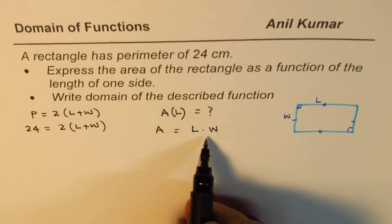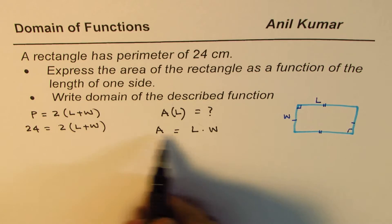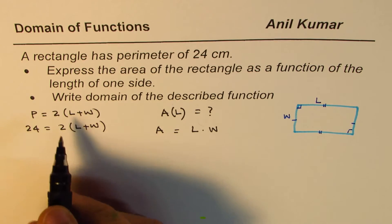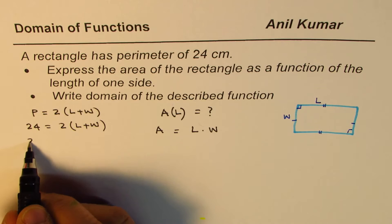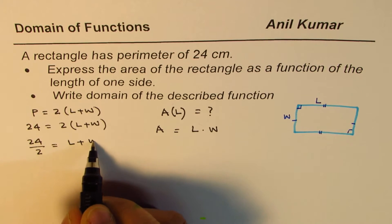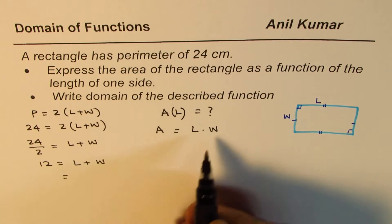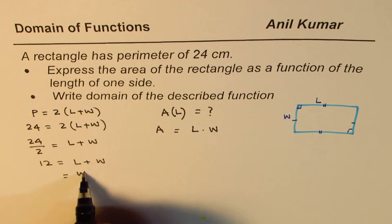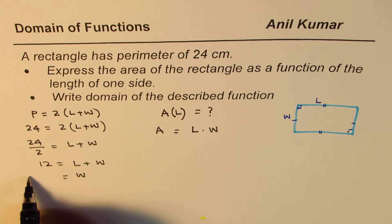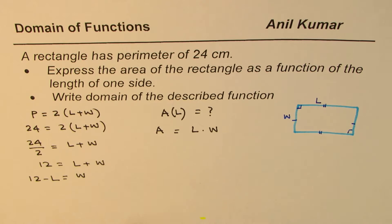Now if you want this equation only in terms of L, not width, then we have to isolate width from the given condition. So let's do that. That's our approach. So now we'll divide by 2. We get 24 divided by 2 equals to length plus width. That is 12 equals to length plus width. Or we don't want width here, so we'll write width in terms of length, which is 12 minus L.